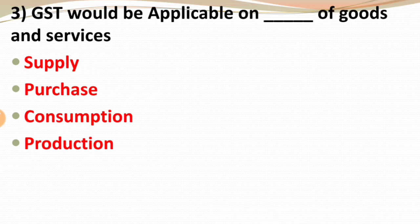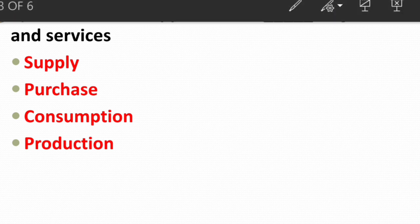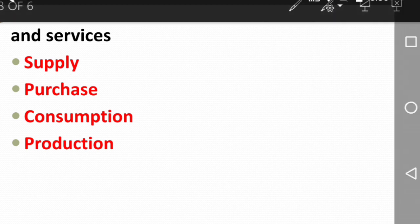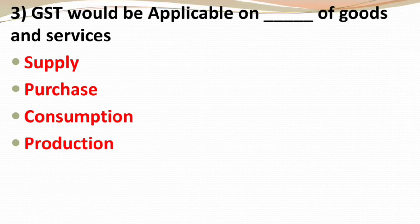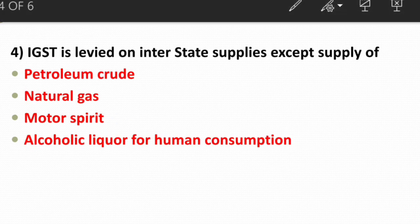Next question: GST would be applicable on ___ of goods and services. One important word to remember in GST is 'supply.' GST is applicable on supply of goods and services, so the right answer is supply of goods and services.